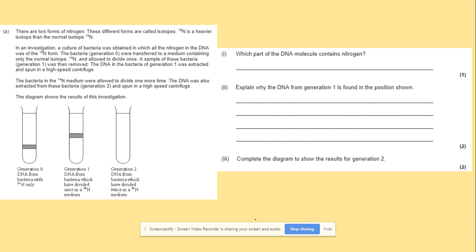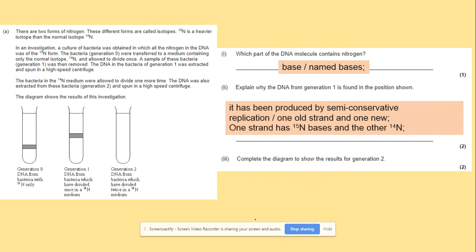Which part of DNA molecule contains nitrogen? Of course, the base. Explain why DNA from generation one is found in the position shown: semi-conservative replication. Half of the strand will be the old one with N15 and the other one will be N14, hence in the middle. Complete the diagram showing the results in generation two, exactly the same as before. You've got the band here.